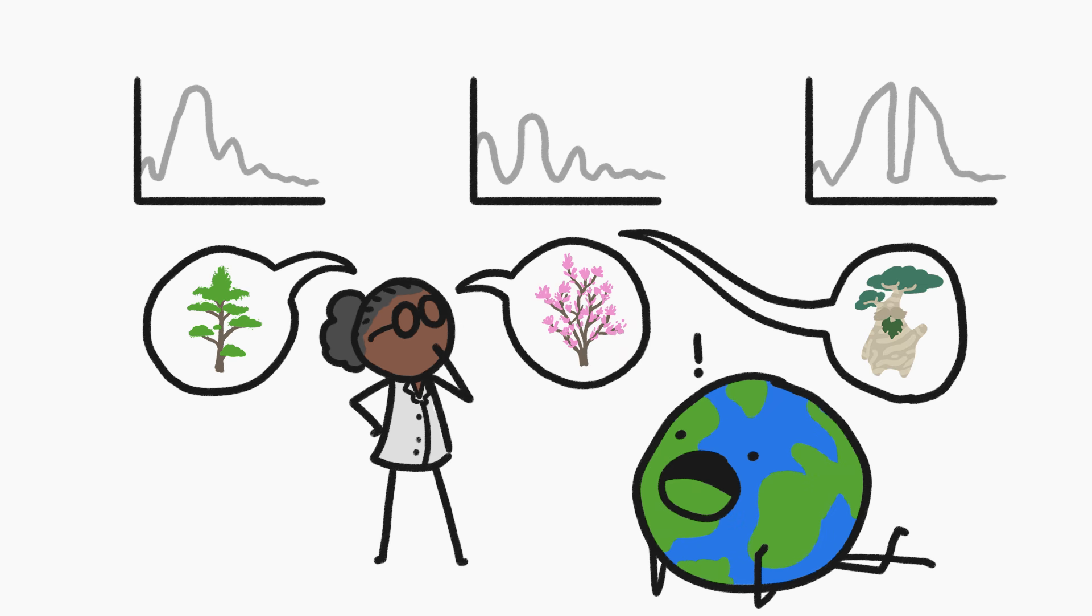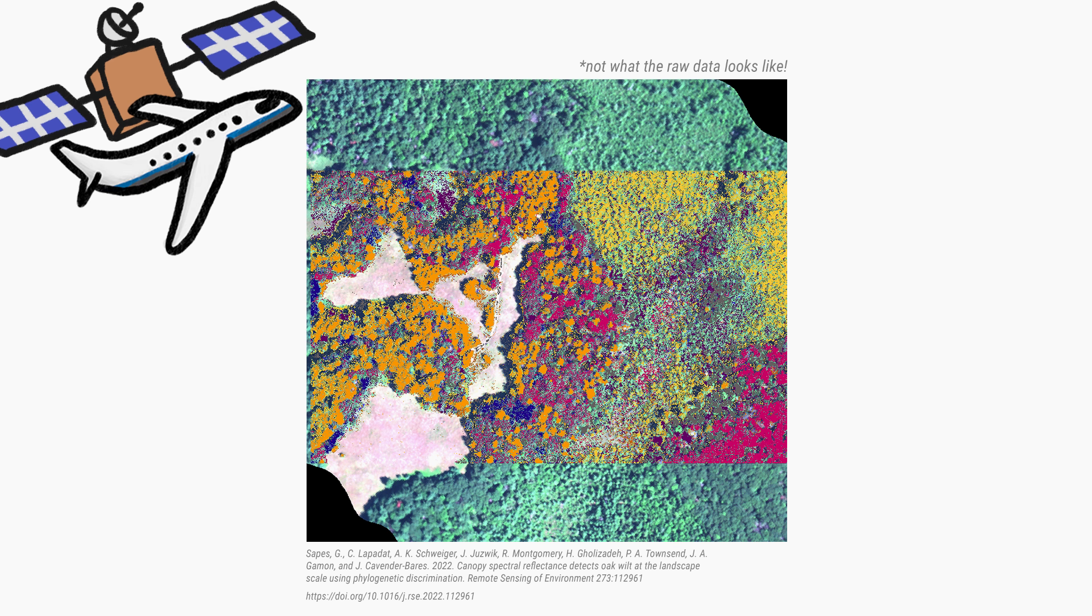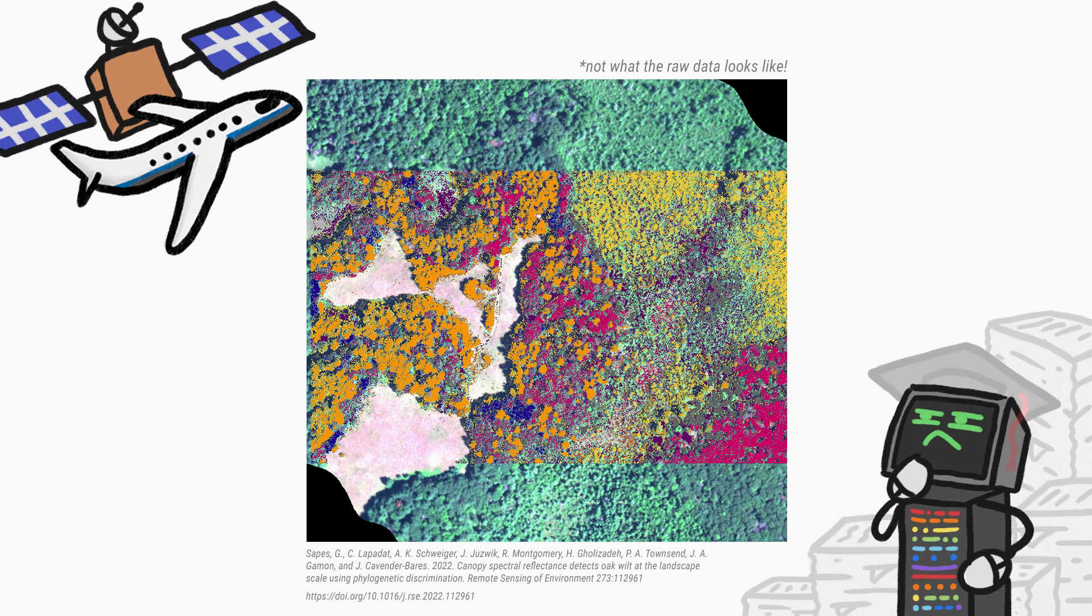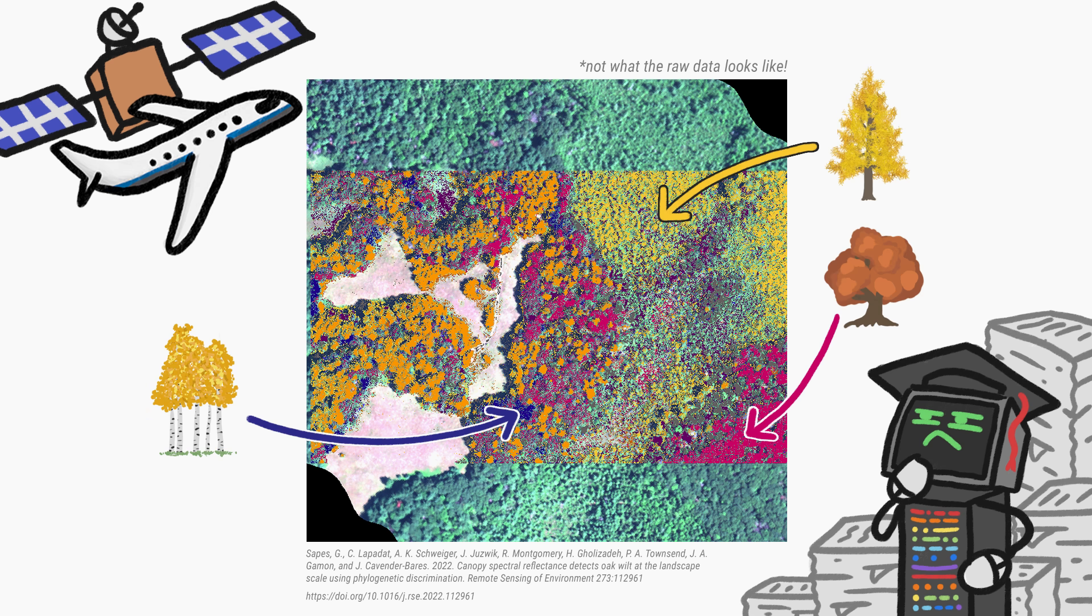And that has tree-mendous implications for our planet. Tree-cologists can run fancy images from planes and satellites through computer programs trained on the spectral signatures of thousands of different tree species. And the programs can identify the species that live there.